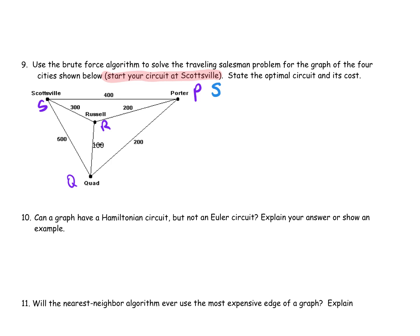I'm starting at Scottsville for each one of these. I'm going to go to Porter first, then to Quad, back to Russell, and back to Scottsville — because it's got to be a circuit. Then my next one: I'm going to go Scottsville to Porter, but now I flip it — going to Russell before Quad, then back to Scottsville. Those are both combinations where I'm going Scottsville to Porter.